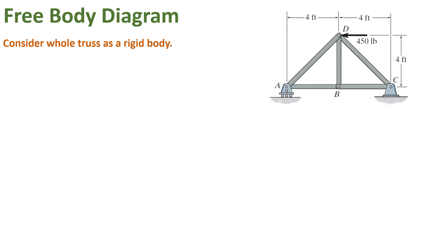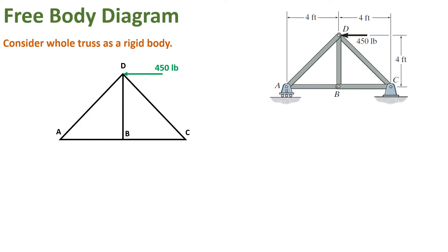The first thing we need to do is draw the free body diagram. For the free body diagram, we consider the whole truss as a rigid body. The 450-pound force is applied at point D in the left direction. The roller support is replaced by its reaction, which is the only reaction in the vertical direction at A, and the pin support is replaced by two reactions CX and CY in the X and Y directions respectively.